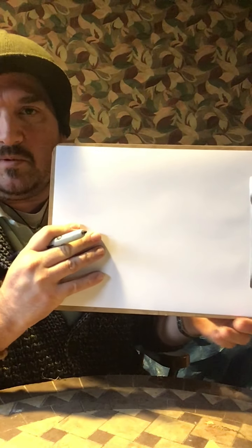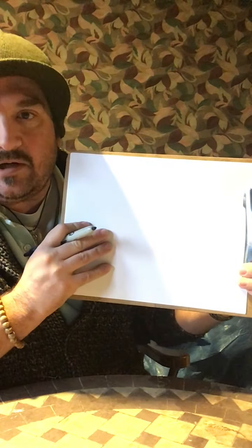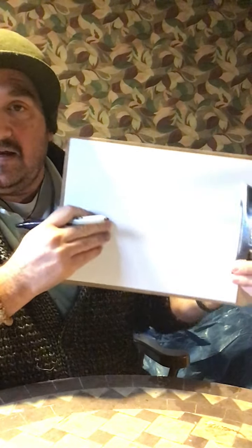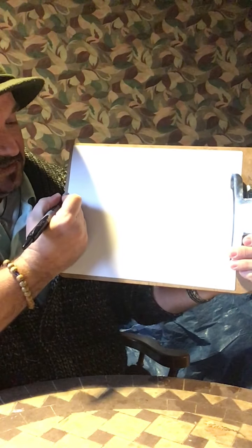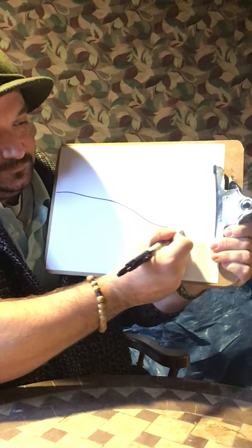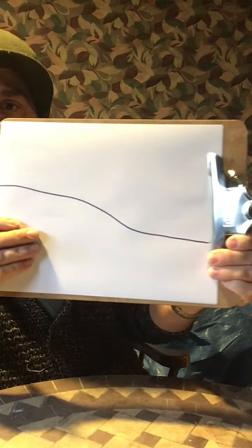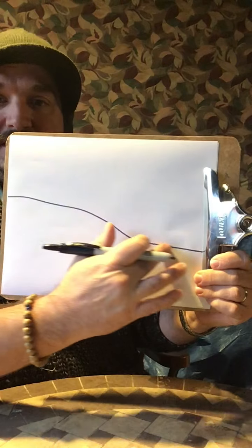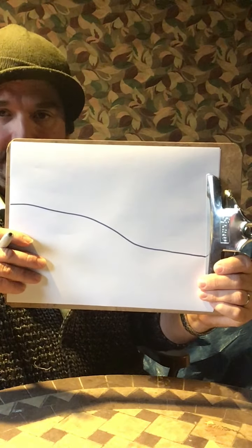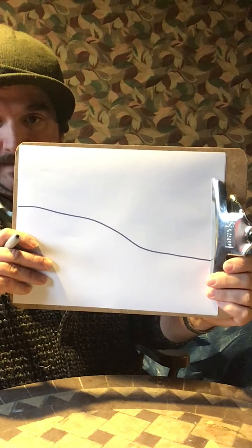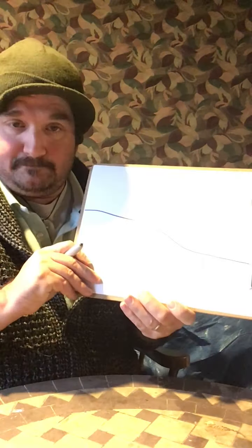In the landscape format, what we're gonna do first is establish a horizon line. The horizon line is a line that separates the ground from the sky — everything below it is the ground, everything above it is the sky. Our horizon line for this picture is not gonna be straight; it's gonna have a little bit of a curve to it.